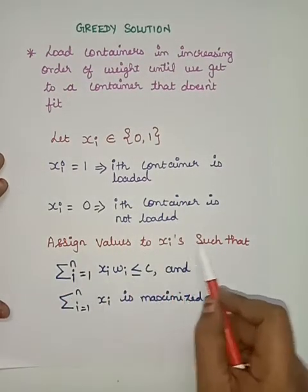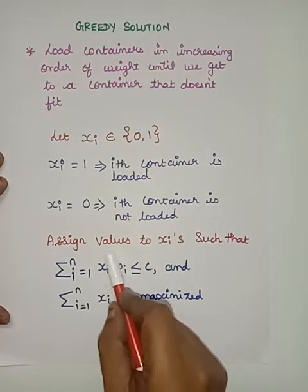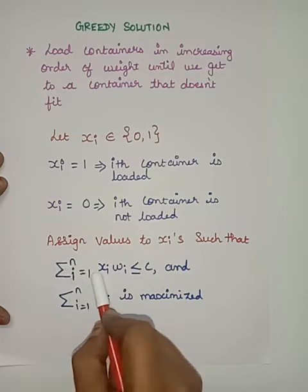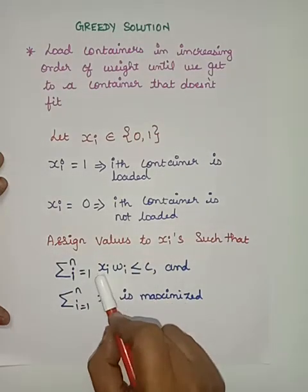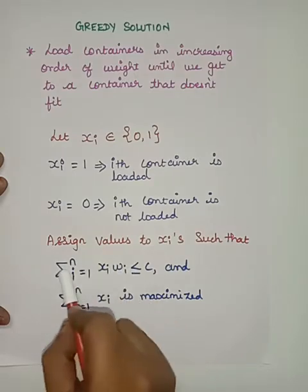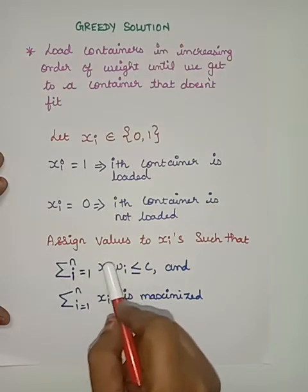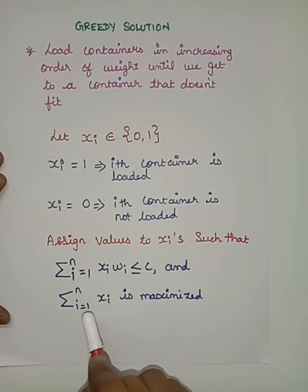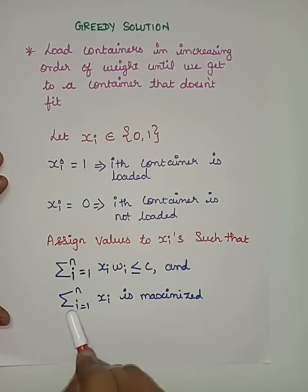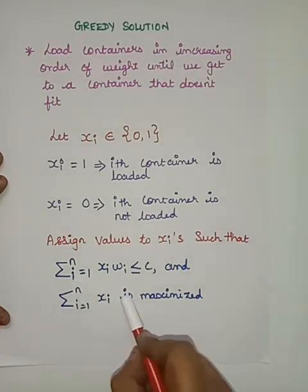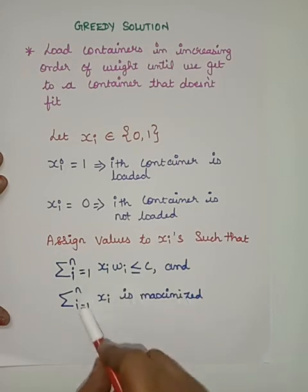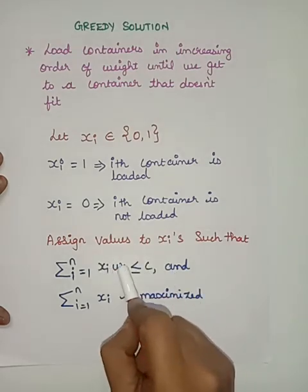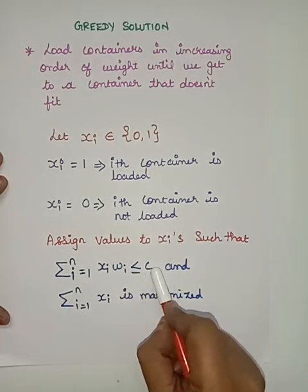Assign values to Xi such that the cumulative container weight — the summation from i=1 to n of Xi times Wi — should be less than the capacity C of the ship. Also, the maximum number of containers should be loaded, meaning the summation from i=1 to n of Xi is maximized. The number of containers loaded into the ship must be as high as possible, while the cumulative weight remains below the ship's capacity.